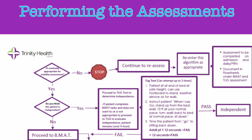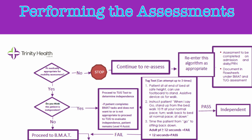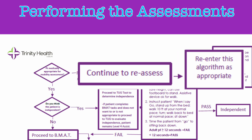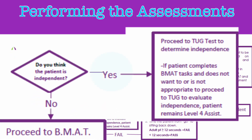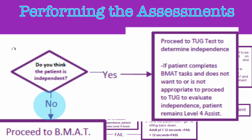But that doesn't mean that you are done with the BMAT and TUG. The assessment is required every shift, and you will reassess the patient every shift or when there is any perceived change. If during the reassessments the patient moves past these restrictions and you answer yes to this initial question, you will continue to the assessment portion. The next prompt is: do you think the patient is independent? If you believe your patient can ambulate independently, even if they need an assistive device like a walker or cane, you can go directly to the TUG test. If you do not think your patient can walk independently, proceed directly to the BMAT assessment.